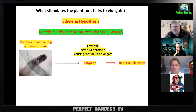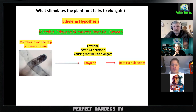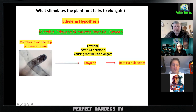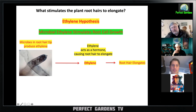We also know that the microbes are producing nitric oxide. Both nitric oxide and ethylene are hormones for the plant, and they cause cell growth. Those microbes accumulate — you can see them, the little black things — those are the bacteria on the root tip, the hair tip. You can imagine those microbes secreting ethylene at the tip, causing that hair to continue to grow and elongate.